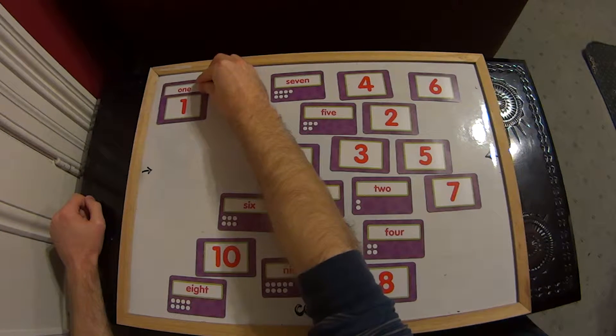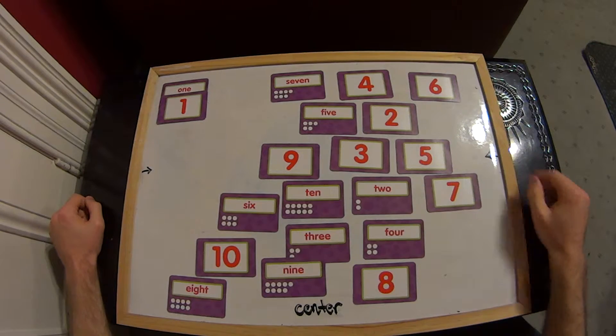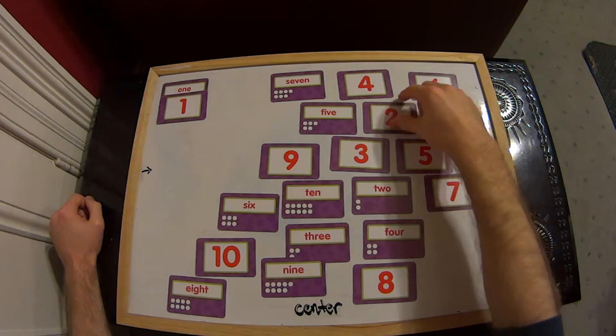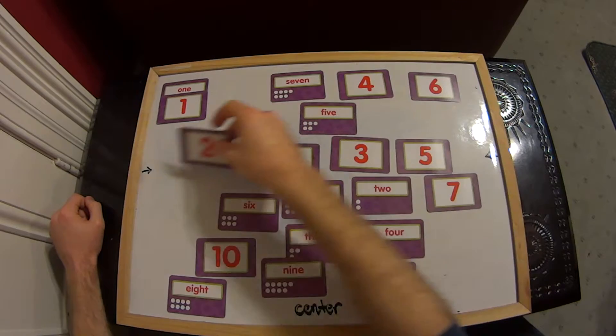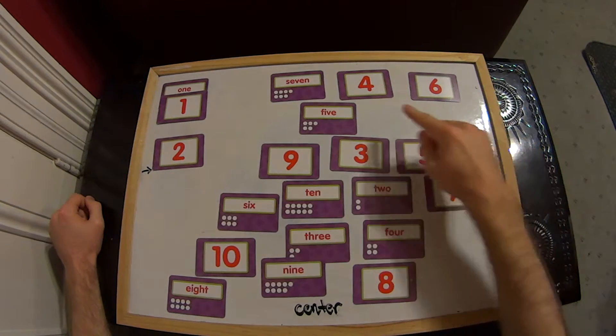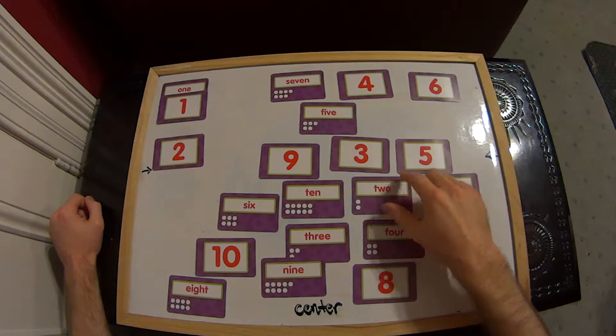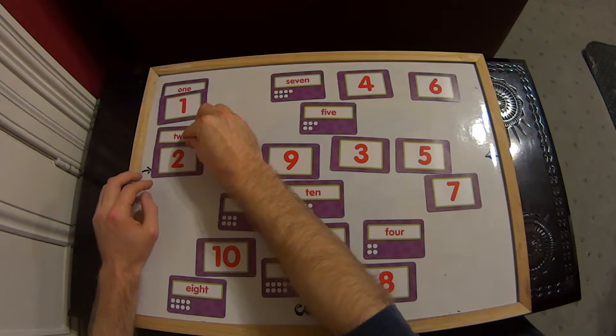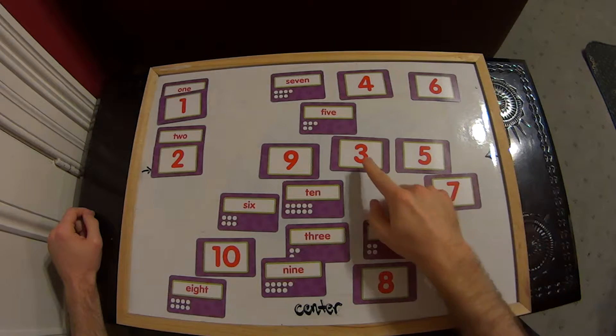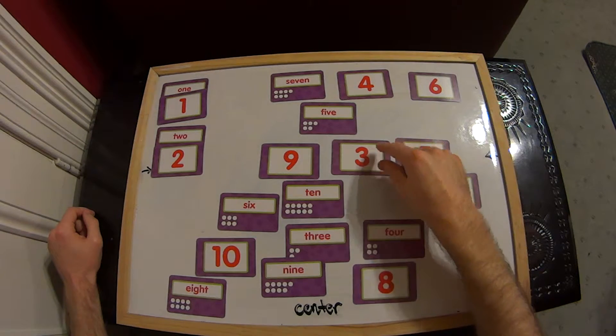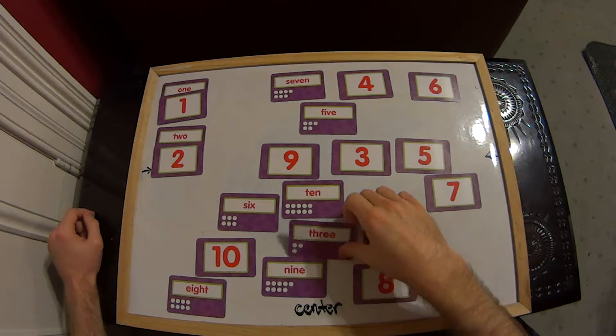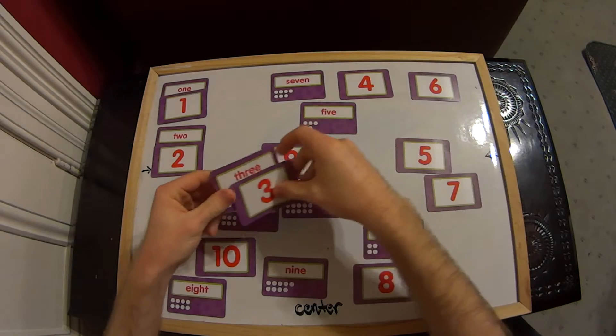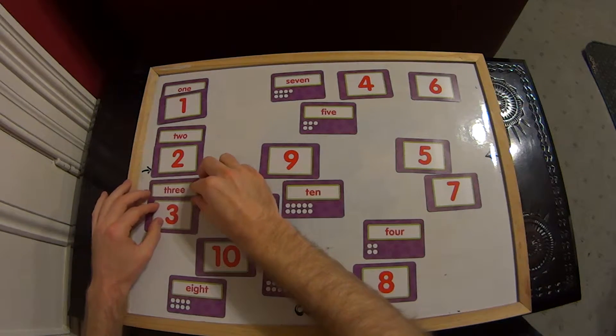Let's keep going on this one. So the next number, obviously, we want to look for is 2. There's our 2 right there. And now we want to find the word 2, there we go. So we'll take that, put that up there as well. Alright, now number 3, there's our 3, and 3 in words. So we can take those 2, put them there.